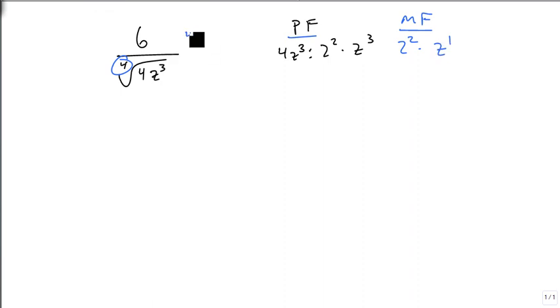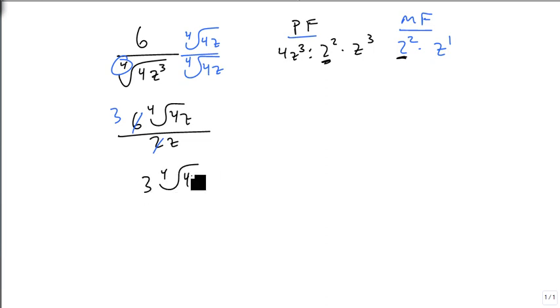So we're going to multiply by the fourth root of 4z over the fourth root of 4z. This gives us 6 fourth roots of 4z on top, and 2z on bottom. We only need a single 2, because we only came up with 4 2s. We then need to reduce our fraction. And so our final answer is 3 fourth root of 4z over z. And we have completely simplified our radical at this point.